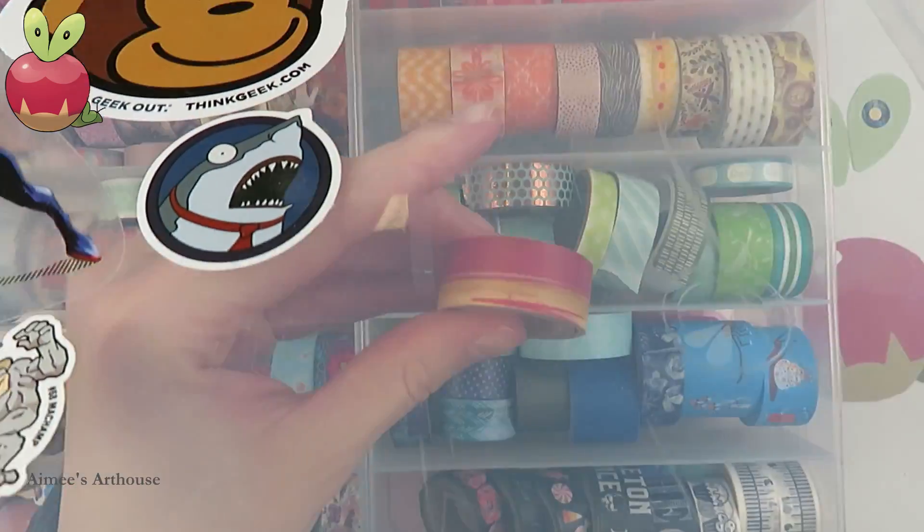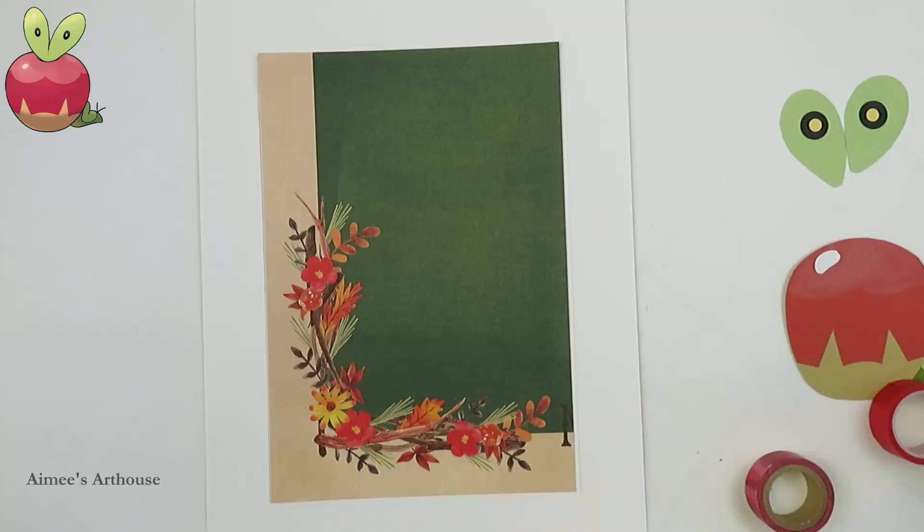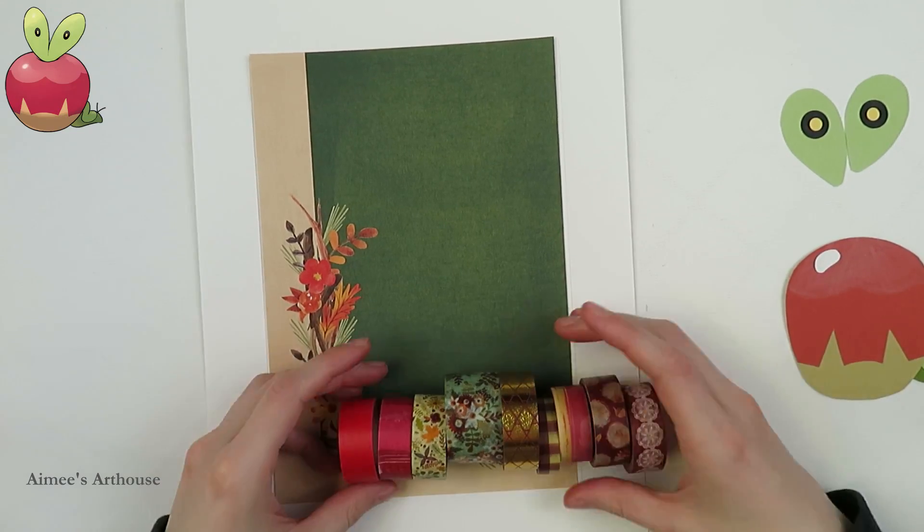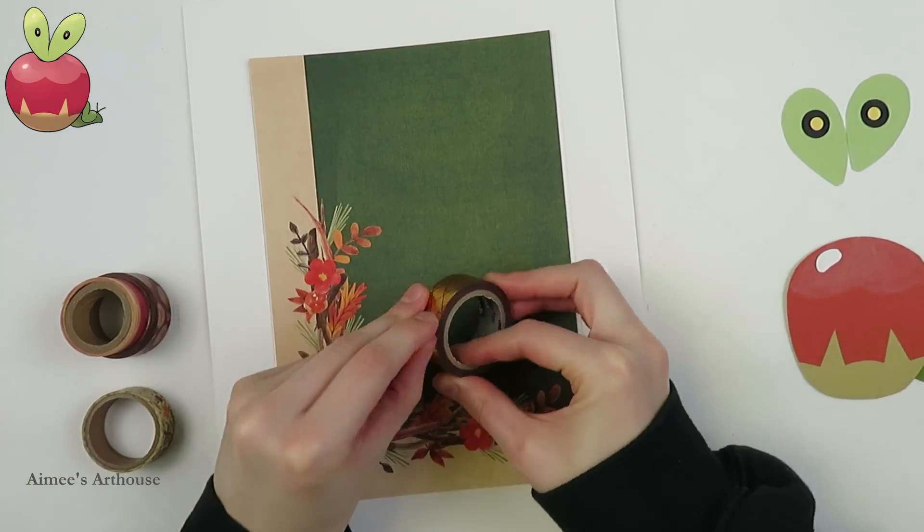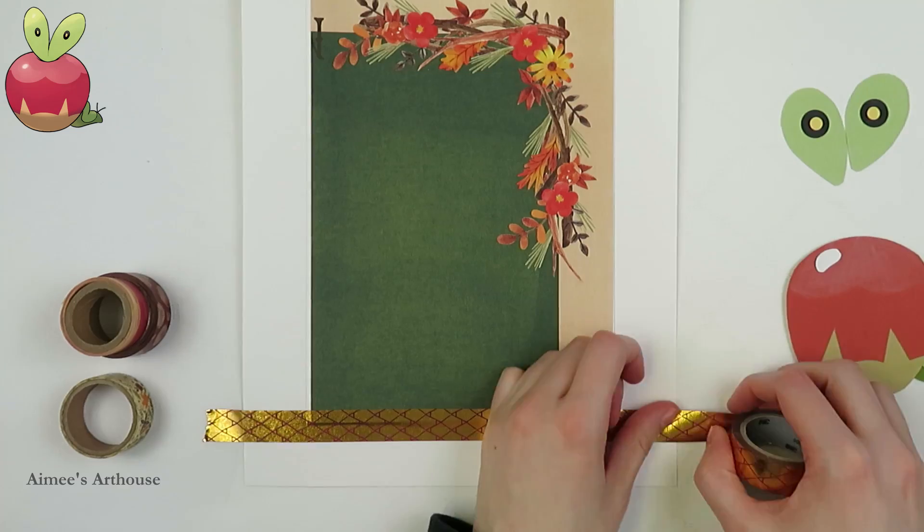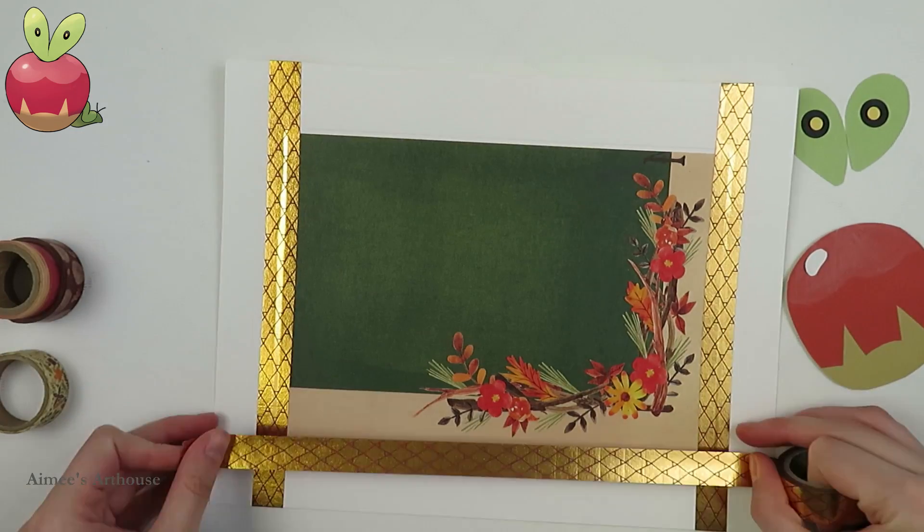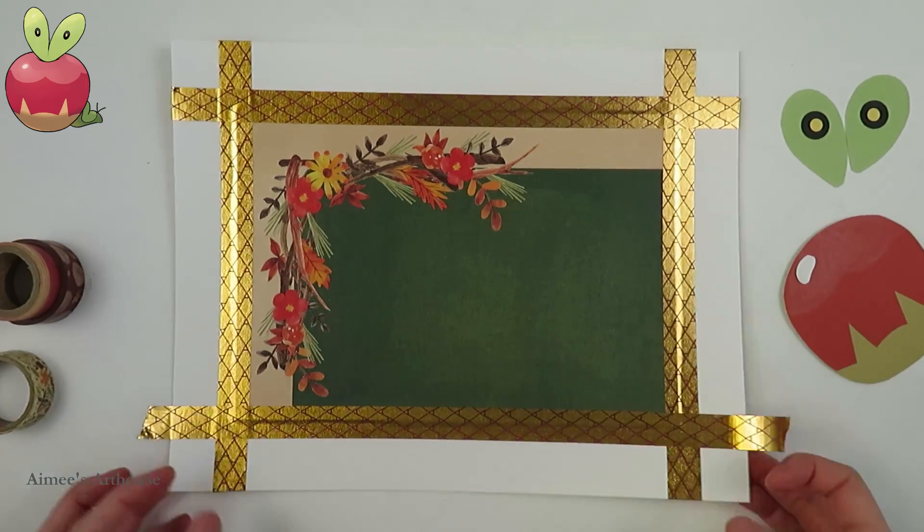It has a nice little bit of leaves and branches and now I'm picking the washi tape for the frame. Sometimes I'm not sure what I want to use so I just take a whole bunch out and stare at them all until I decide. But I thought that gold with a little hint of red or burgundy would be very nice for this one.